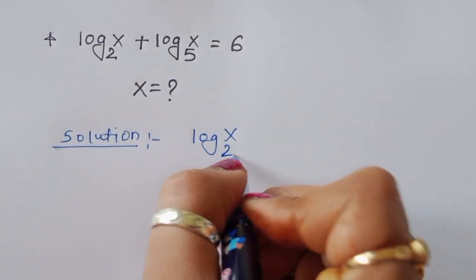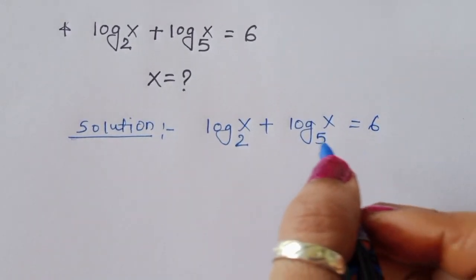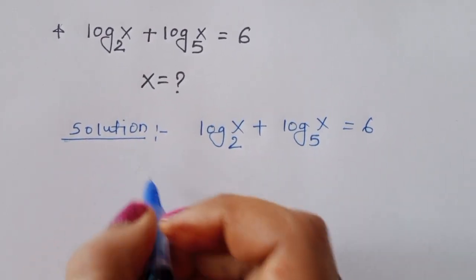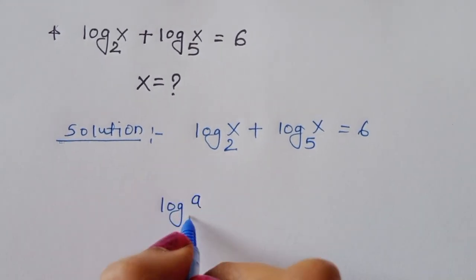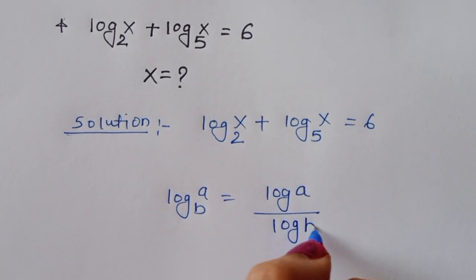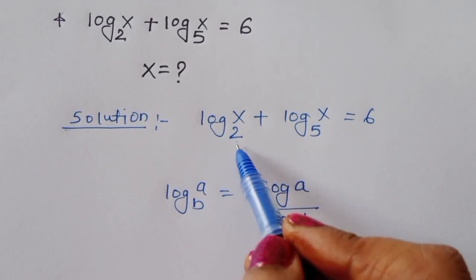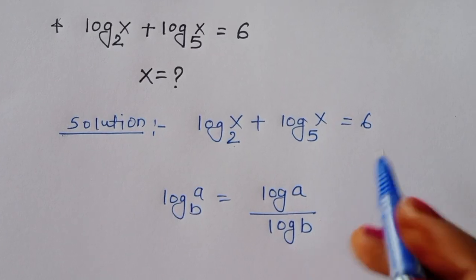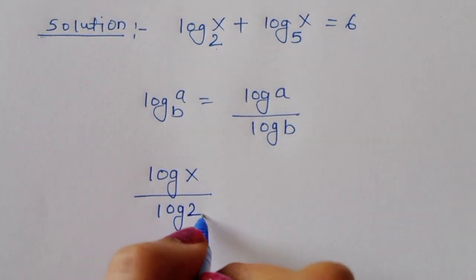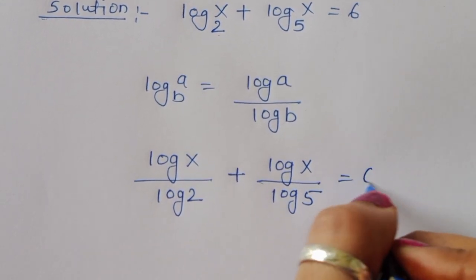Log of x to the base 2 plus log of x to the base 5 is equal to 6. We can apply the change of base formula: if log of a to the base p is given, we can write it as log of a divided by log of b. So log of x to the base 2 becomes log of x divided by log of 2, and log of x to the base 5 becomes log of x divided by log of 5. So we write: log(x)/log(2) plus log(x)/log(5) is equal to 6.